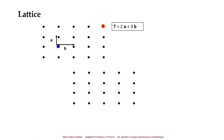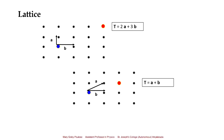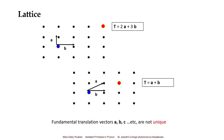In another type of lattice, to move from the blue point to the red point, we can also define the fundamental vectors differently — b as a vector along one direction and a along another direction — giving the translation vector as T = a + b. From this we understand that the fundamental translation vectors a, b, c are not unique; they can be different in different lattices.